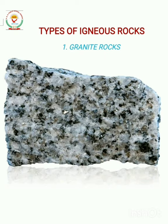The next topic is types of igneous rocks. The first type is granite rocks. Granite rocks are formed by the slowly cooling pockets of magma that are trapped within the Earth's surface. As you can see in the image, granite rocks are made up of two main minerals: quartz and feldspar. They are used for building monuments, making statues, and flooring, as they are very hard and do not wear out easily. They are also used for decoration on buildings.